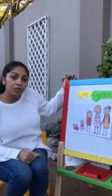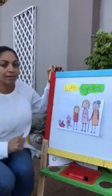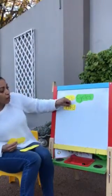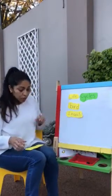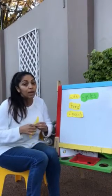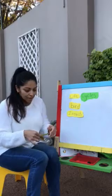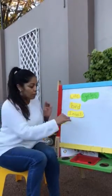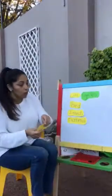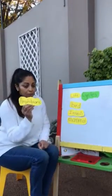So today we're going to be speaking about life cycles. In this theme we're going to talk about the life cycle of a bird. We're also going to talk about the life cycle of insects — and if you remember correctly, for the past three weeks we've been talking about insects, so this week we're also going to talk about the insect life cycle. We're going to speak about the life cycle of a mammal and we're also going to be speaking about amphibians.